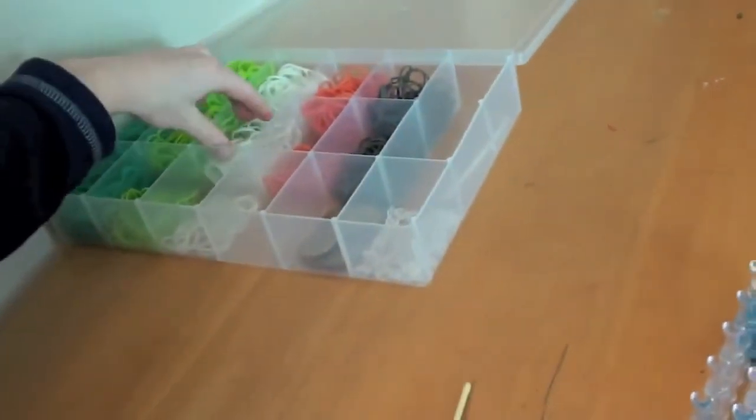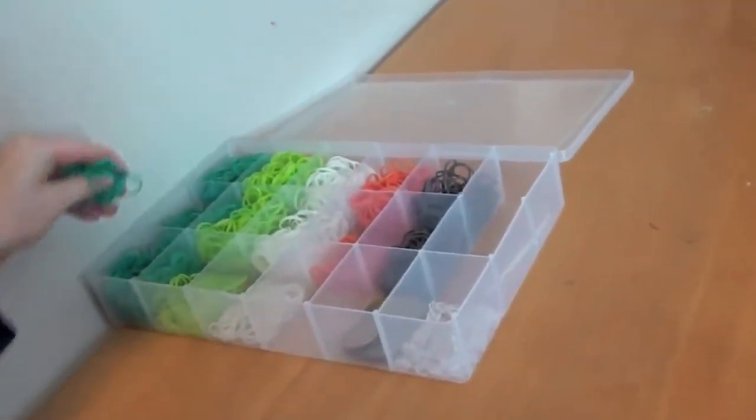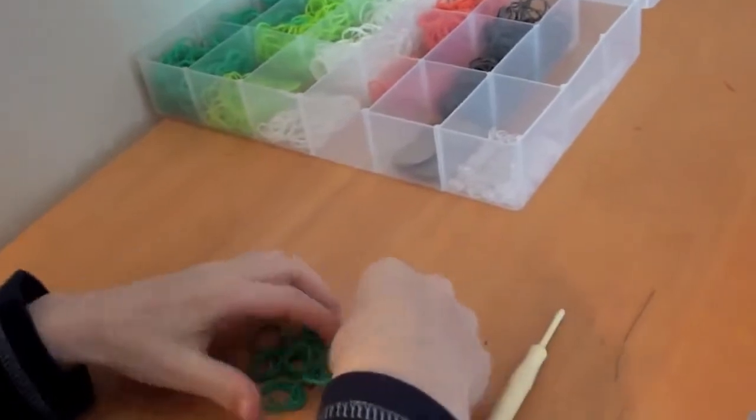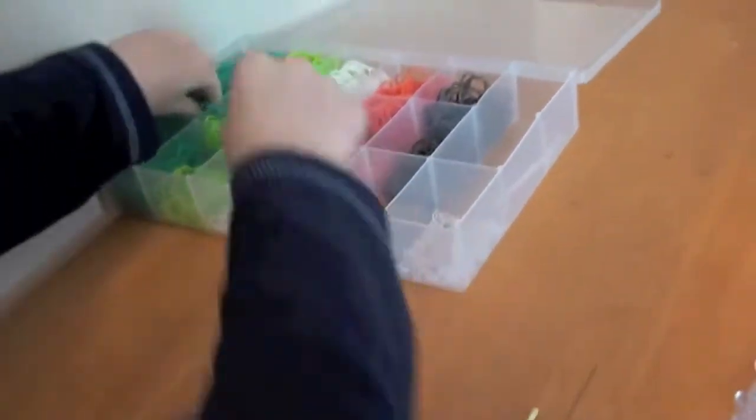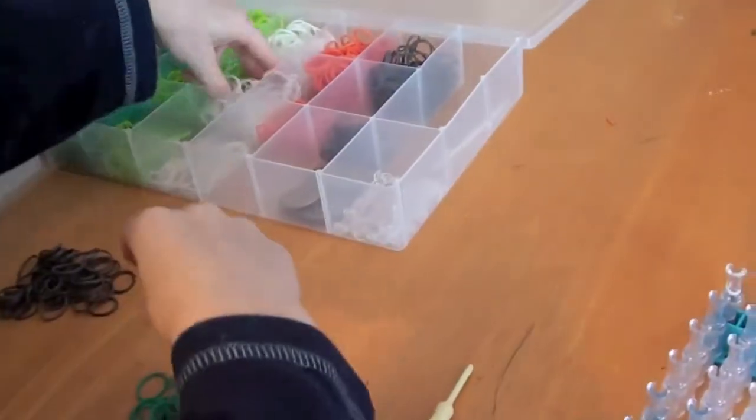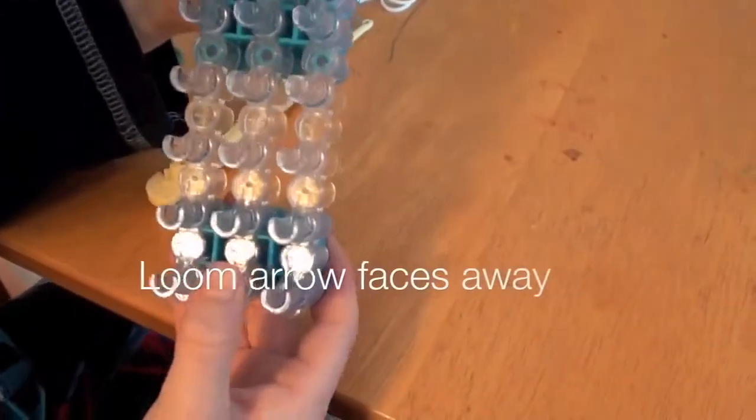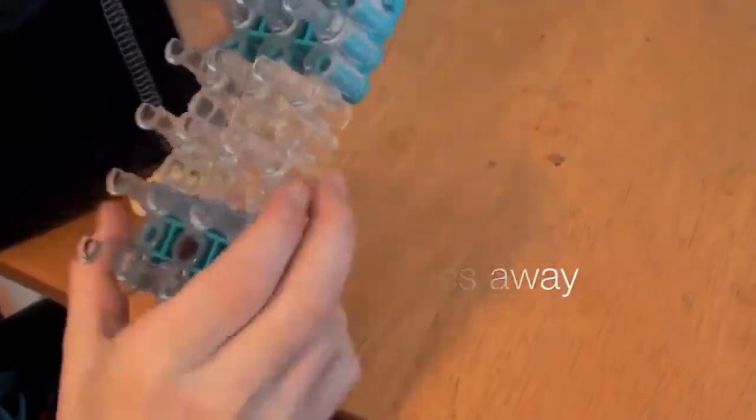First, you need to choose three color bands. My three are this dark green, this gray, and white. You should have your loom with the arrow facing away from you.